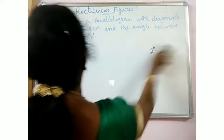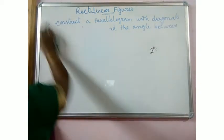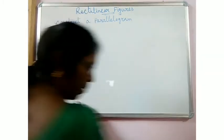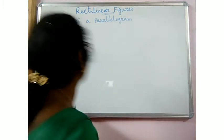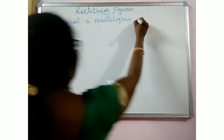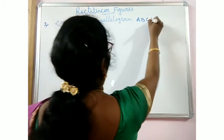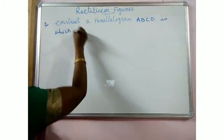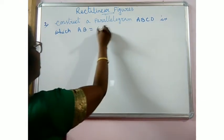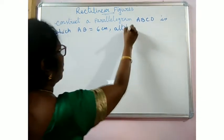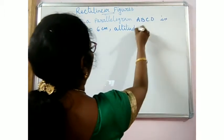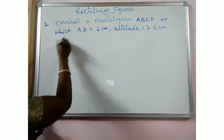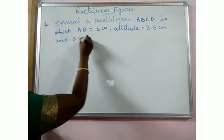Now one more variety of construction of a parallelogram. The second one is: construct parallelogram ABCD in which AB is equal to 6cm, altitude is equal to 3.5cm, and BC is equal to 4cm.